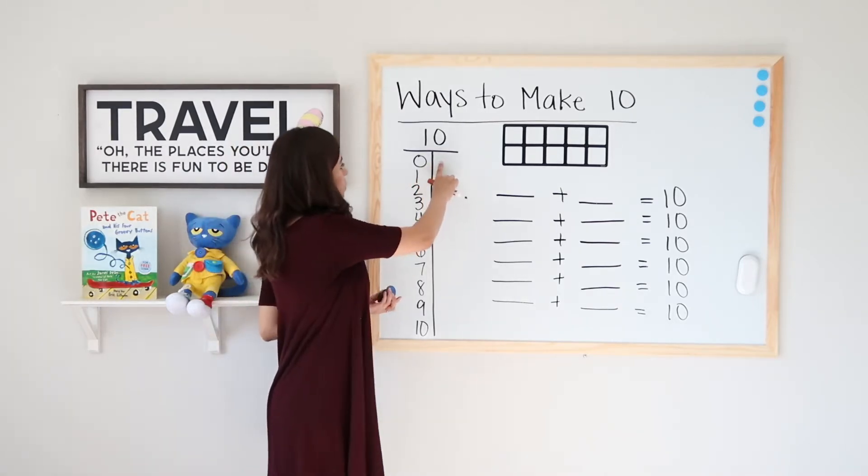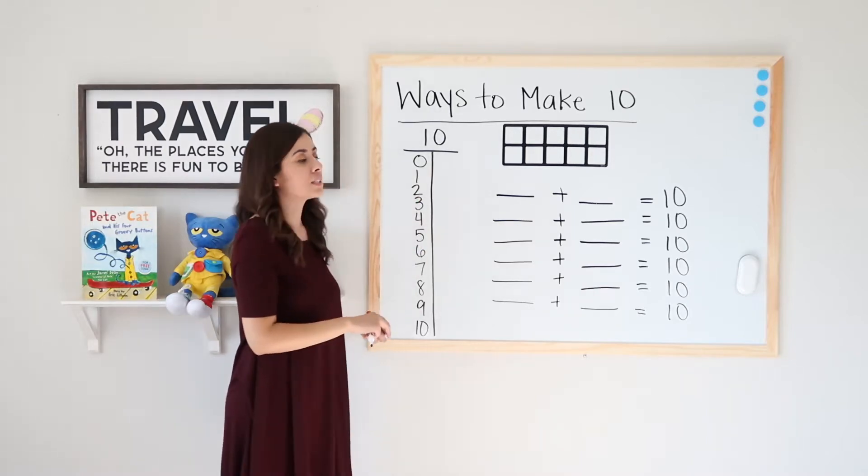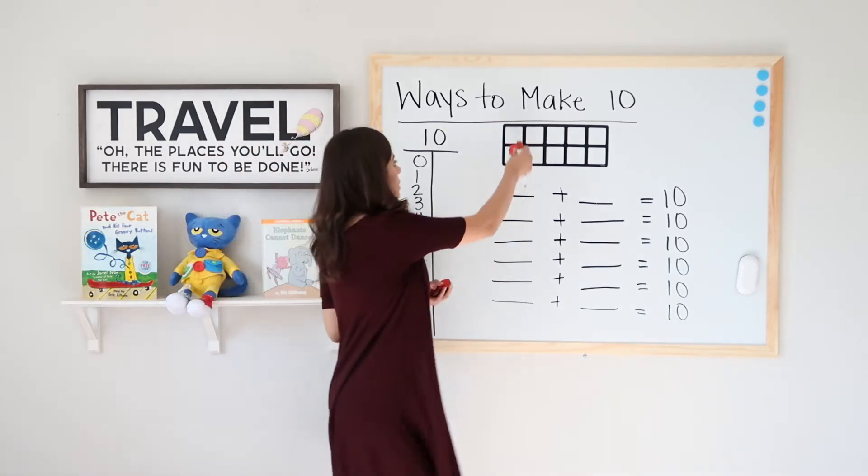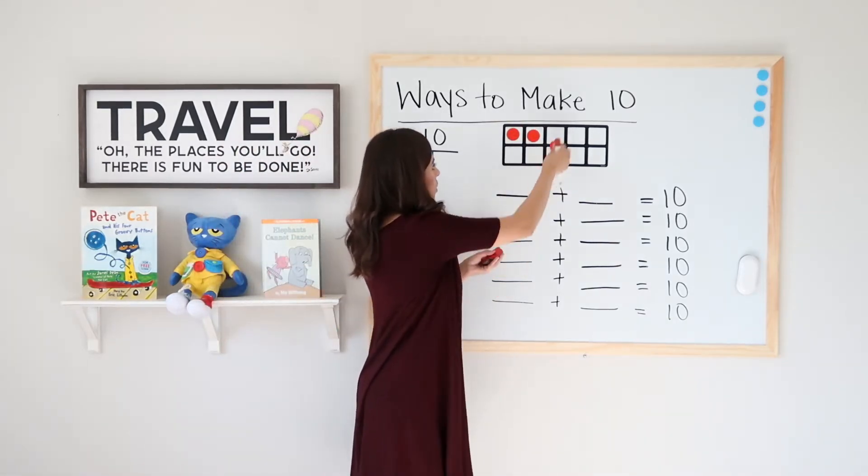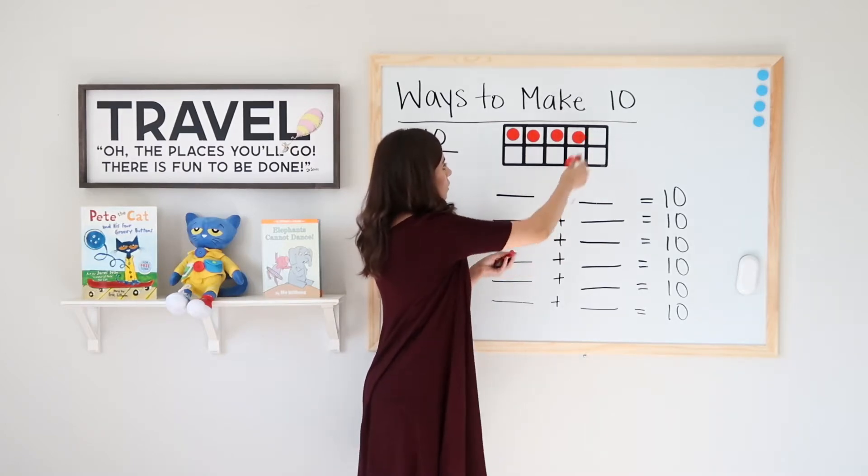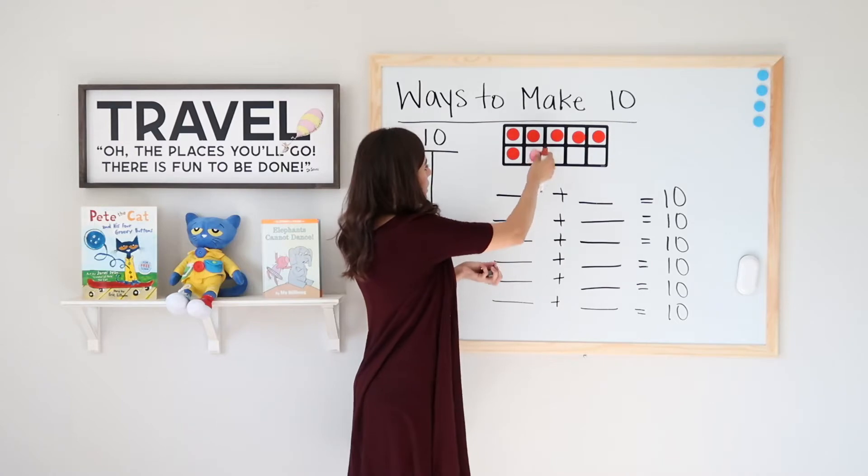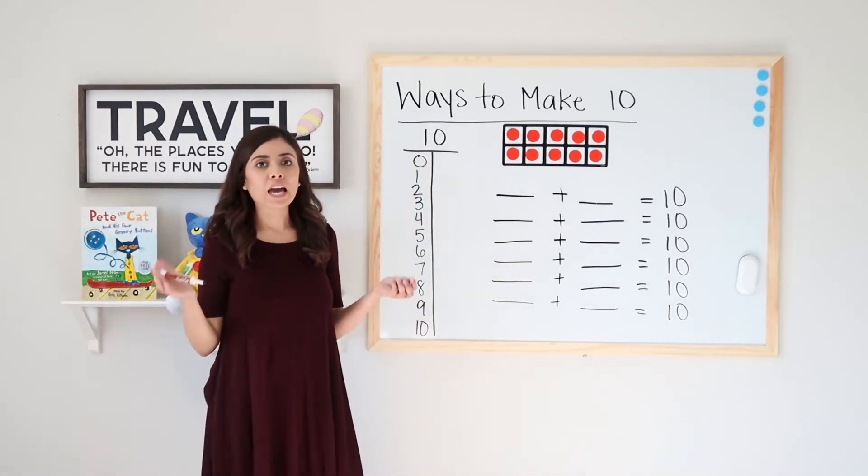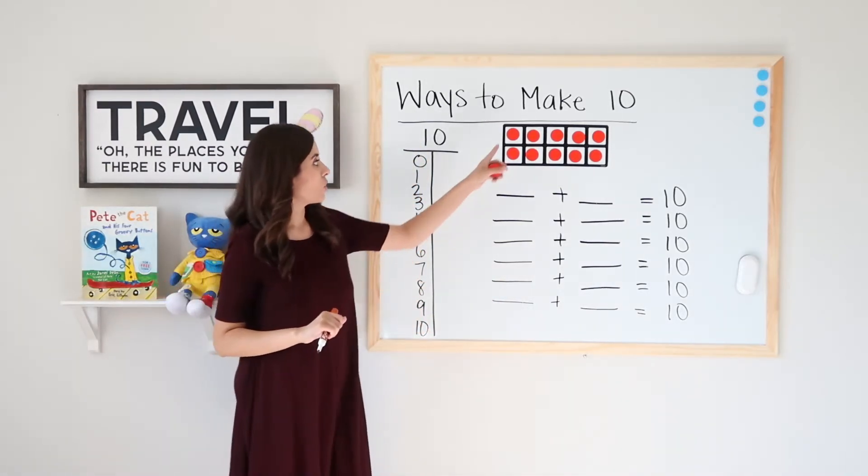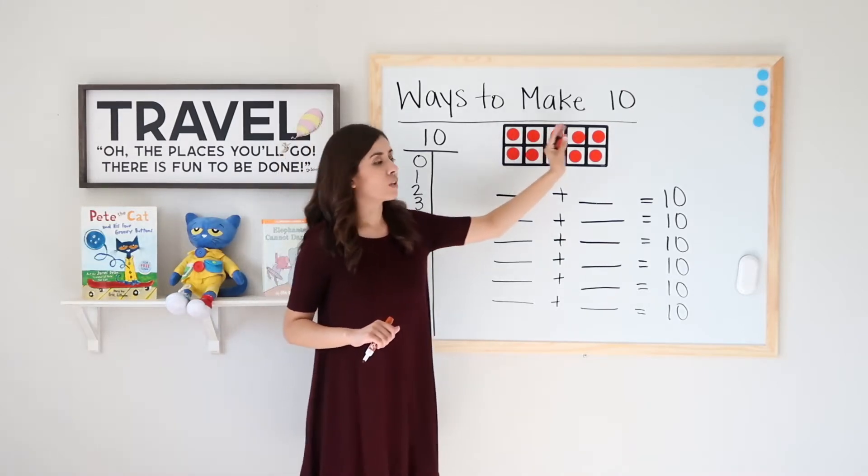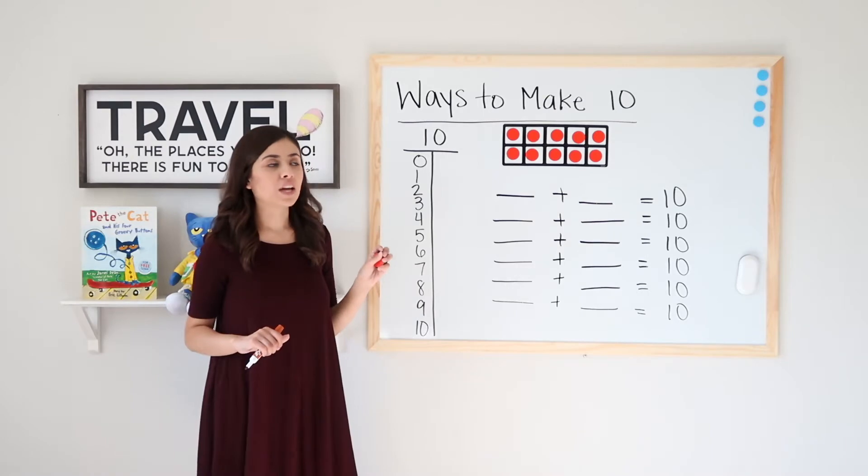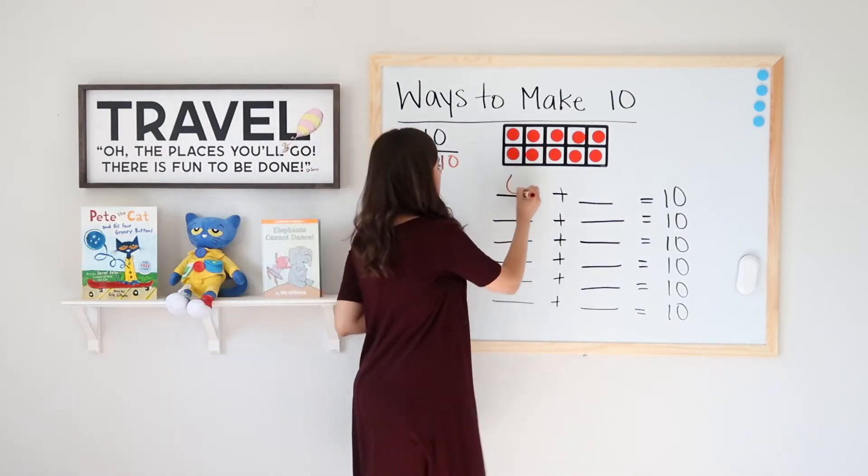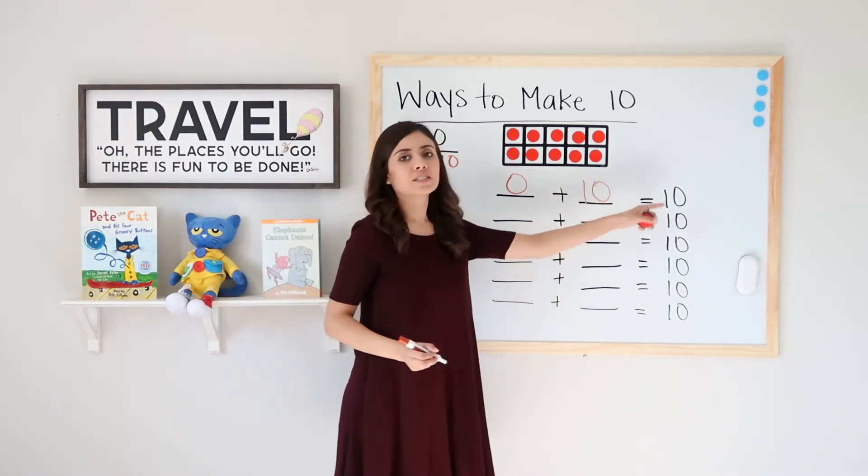If I have 0 blue dots, how many red dots do I need to get my sum of 10? Let's go ahead and count up. So 0 blue plus 1, 2, 3, 4, 5, 6, 7, 8, 9, 10. 0 plus how many red to get to 10? I don't have to count. I already know that I filled the whole chart up so there are 10 red. 0 plus 10 equals 10.